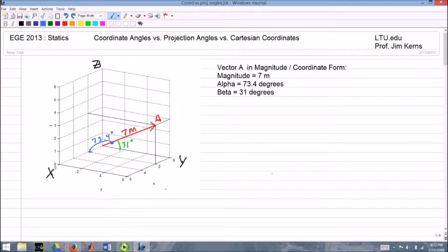Welcome back, I'm Professor Jim Kearns, and today's topic in statics is going to be the difference between defining vectors using coordinate angles and projection angles. Students seem to struggle with coordinate angles versus projection angles. I wanted to take some time and work out an example where we take a vector in magnitude and coordinate angle form.